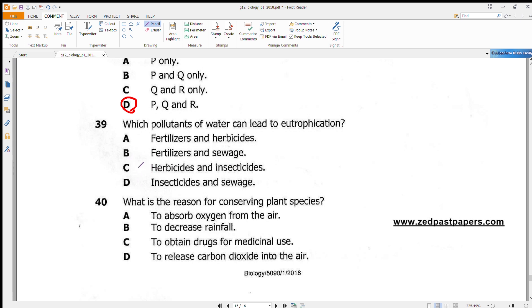Question 40: What is the reason for conserving plant species? To absorb oxygen from the air? Humans and plants both do that, so even if you have plants or not, you will still absorb oxygen. To decrease rainfall? That's wrong because where there are plants you have a lot of rainfall. To obtain drugs for medicinal use? This answer here is correct. Our answer is C. To release carbon dioxide into the air? No, we usually keep plants for photosynthesis where they absorb carbon dioxide and release oxygen. Thank you very much for watching this tutorial. Hope you liked it. Have a nice day.